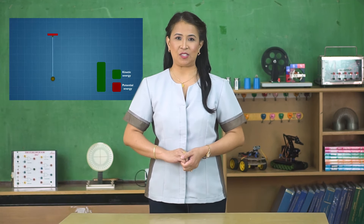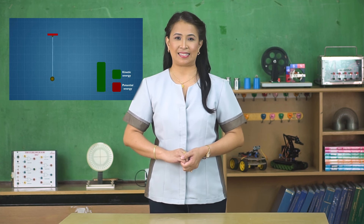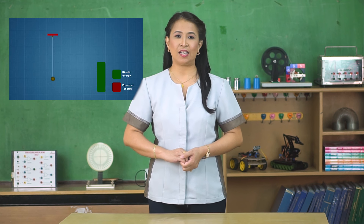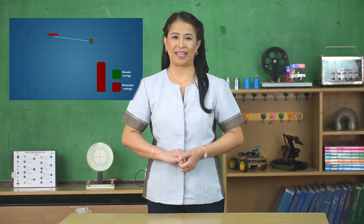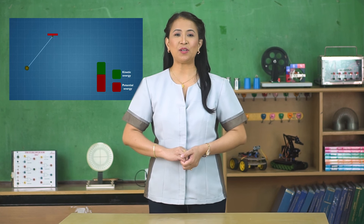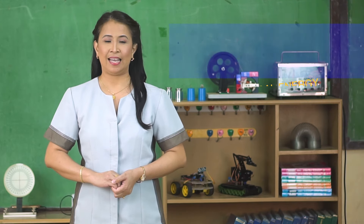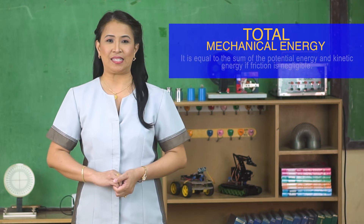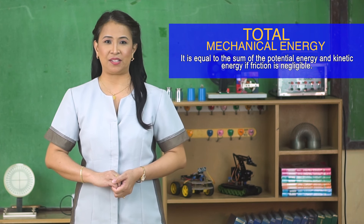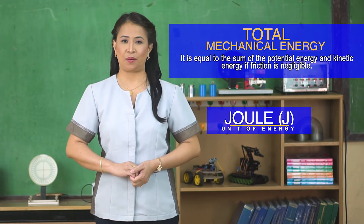When a body is raised to a certain height, the gravitational energy increases. And when it is released, the kinetic energy increases during its course of movement. Based on energy conservation, all the potential energy is converted to kinetic energy upon reaching the ground. The total mechanical energy is equal to the sum of the potential energy and kinetic energy if friction is negligible. The unit of energy is joule.